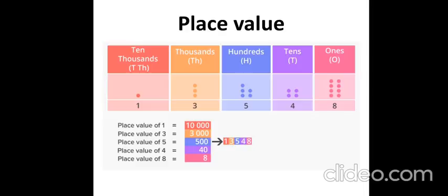First, we are going to see about place value. What is place value? Place value represents the position of the number — that is, whether the number is in the ones place, tens, hundreds, thousands, or ten thousands.